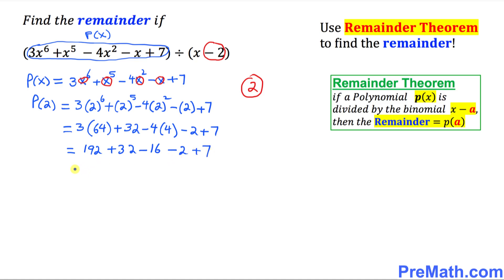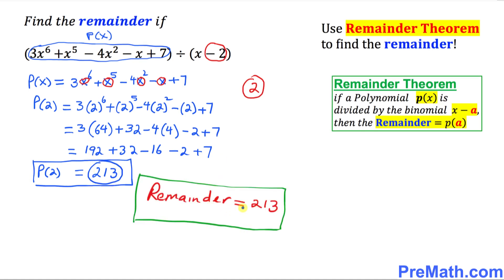Adding and subtracting, we get 213. So p(2) = 213, which means our remainder is 213. And that's our answer.